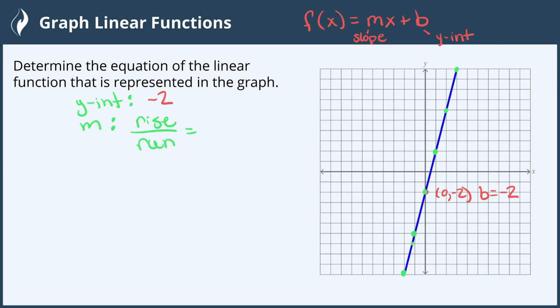So I'm going to pick here, and then I'm going to move up to here. So we move up one, two, three, four units, and then we move over to the right one unit, which is the positive direction. We went up positive four units, and we went to the right positive one unit. Four divided by one is positive four, so our slope is positive four.